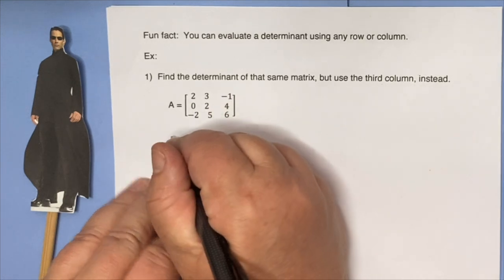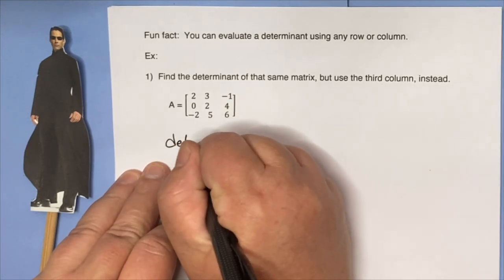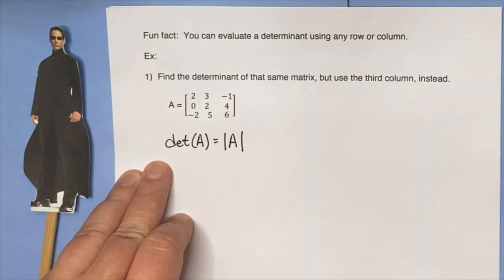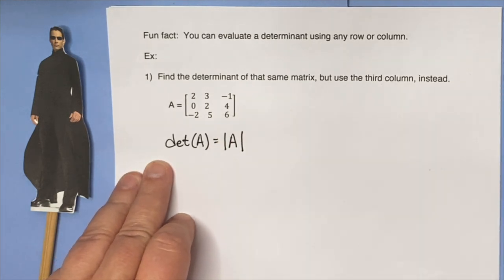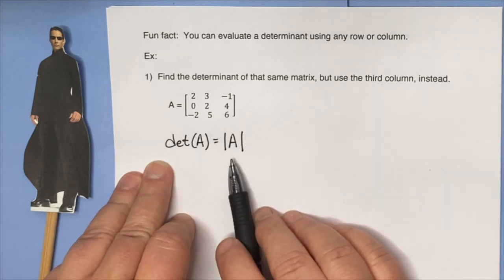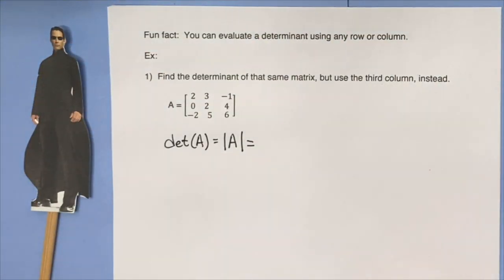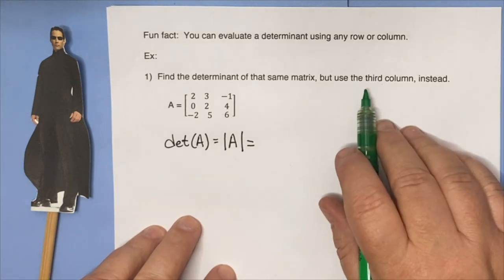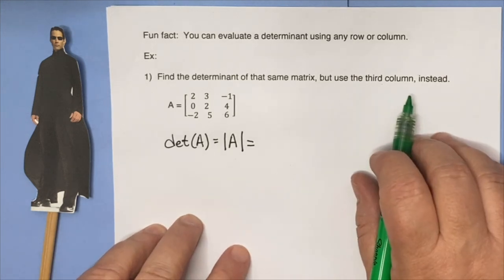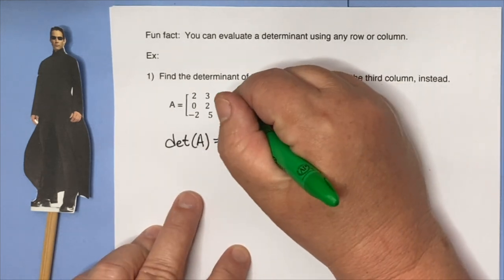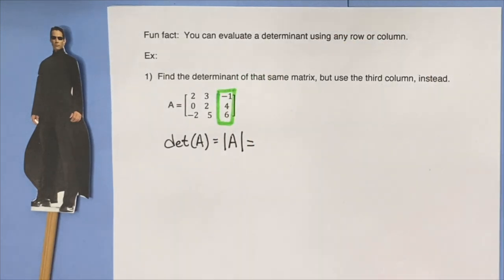So what the heck does that mean? Well, if I want to find the determinant of A — written as A inside what looks like absolute value bars, but it's not, it's the determinant because A is a matrix — we're going to expand using the third column because we can. I'm going to use this column to evaluate the determinant.